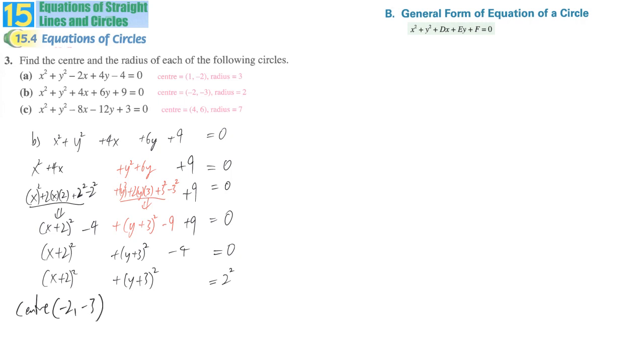It's because it's x minus negative 2 to give you this, y minus negative 3 in order to give you y plus 3 inside. And the radius is equal to 2.